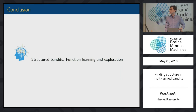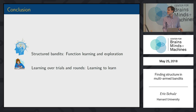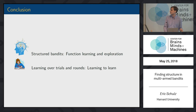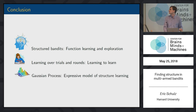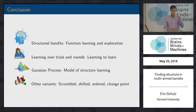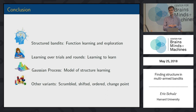To summarize: structured bandits are a cool framework to study function learning and exploration in bandit tasks. We see that behavior is much richer than in traditional bandit tasks. People learn over trials and rounds — they have this learning-to-learn effect. Gaussian processes are just awesome; they are an expressive model of structure learning. We've also run around 800 participants on all sorts of different versions of this, including scrambling the middle option to see if they still pick up on structure — they don't as much, because the structure is destroyed.